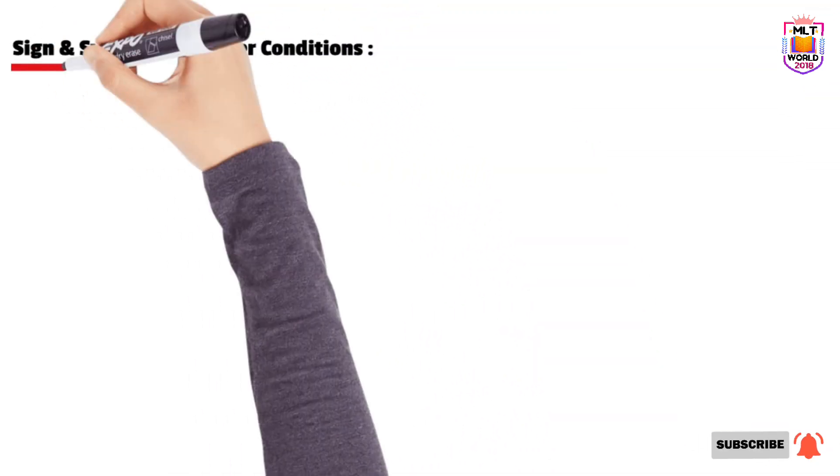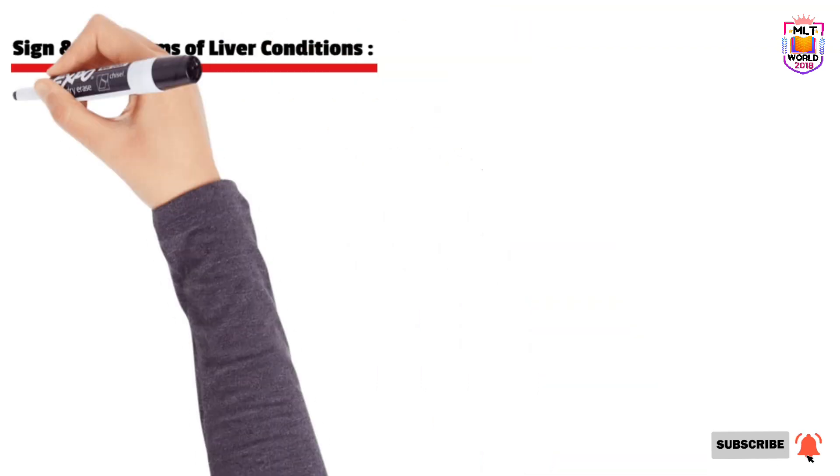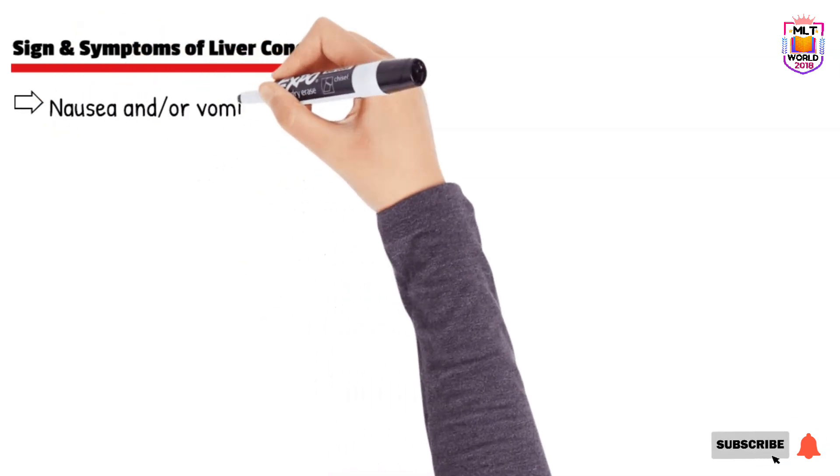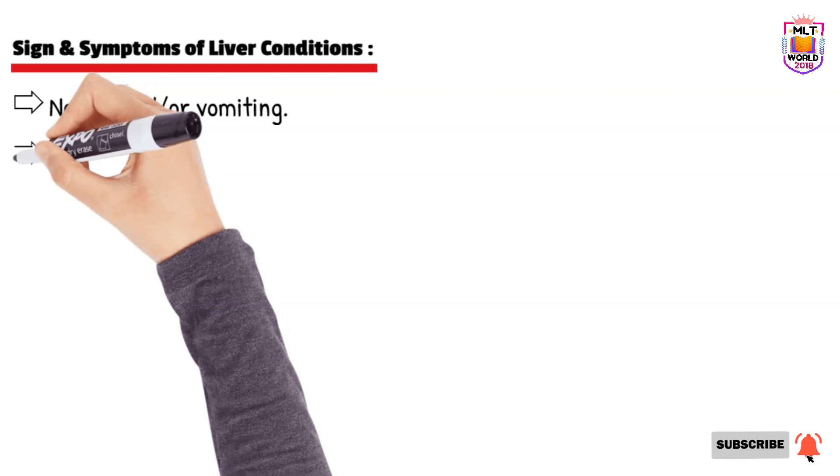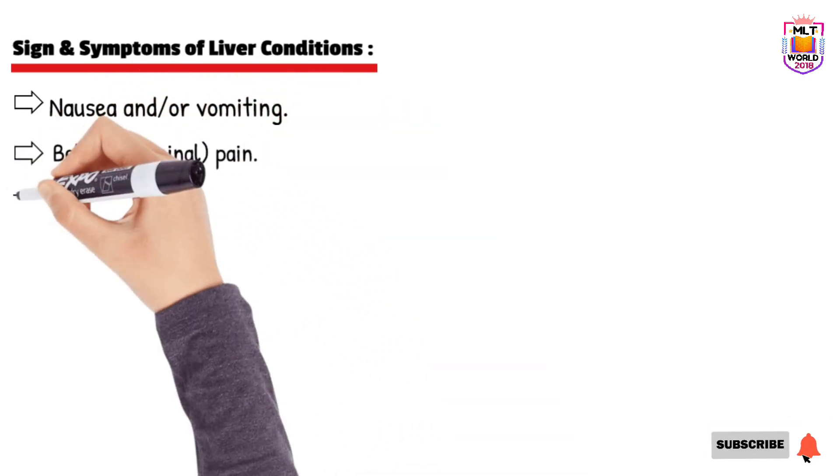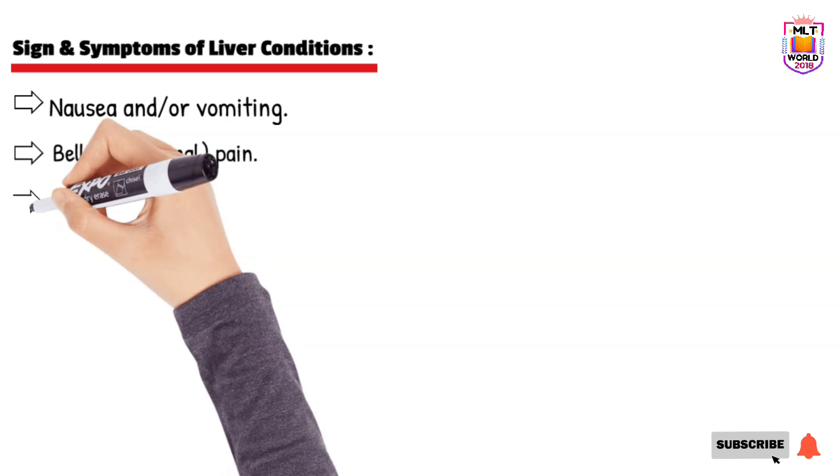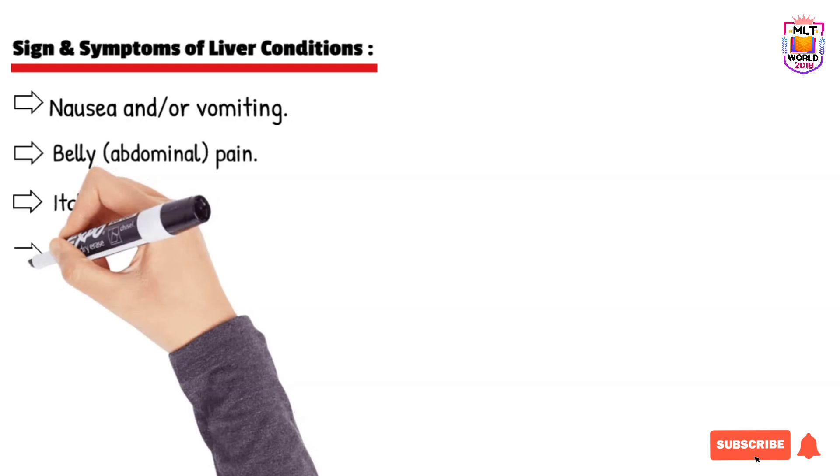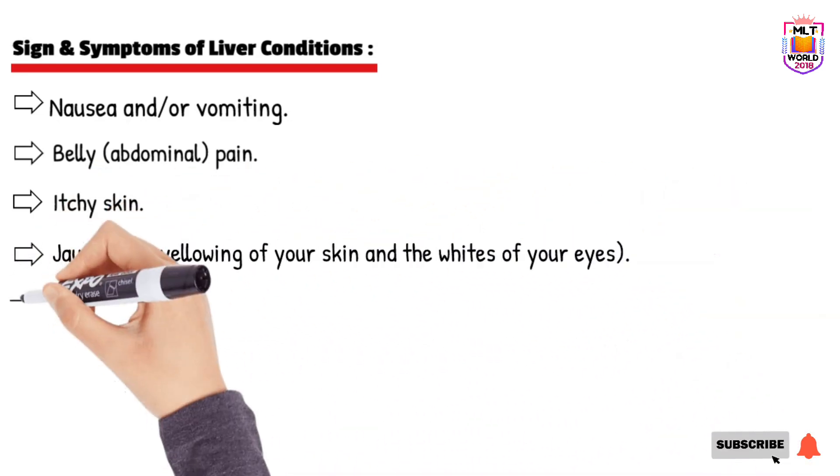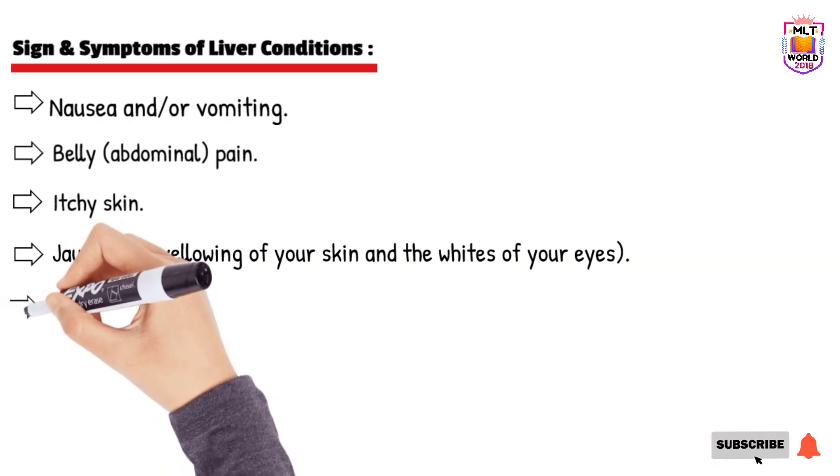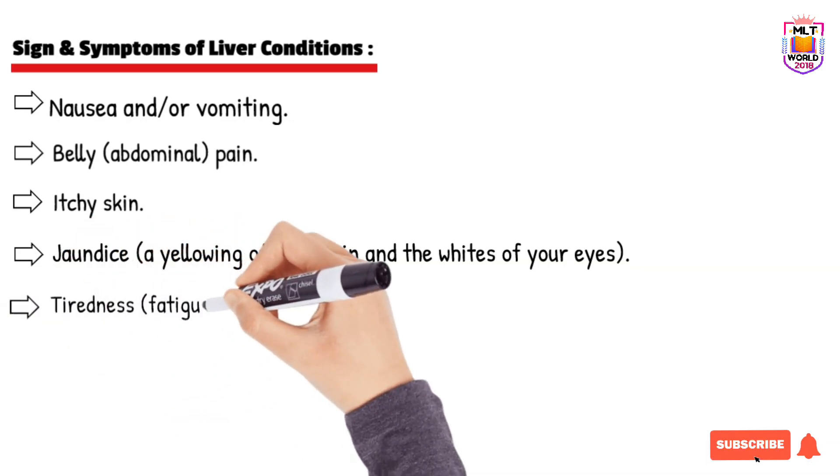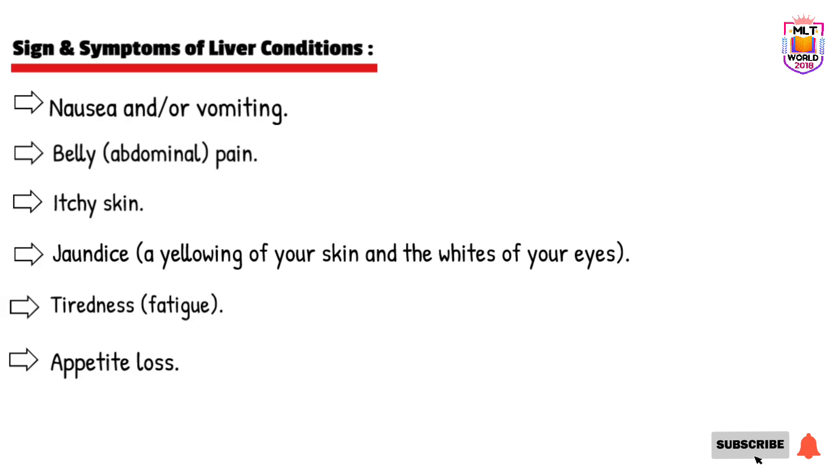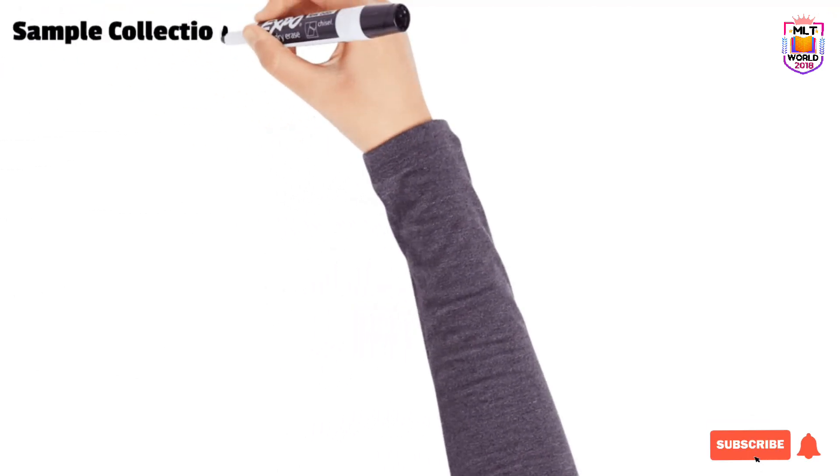What are the signs and symptoms when the doctor will order the AST test? Those are nausea and vomiting, belly or abdominal pain, itching or itchy skin, jaundice which means yellowing of the skin and white part of eyes, tiredness or fatigue, and appetite loss. So these are the signs and symptoms.